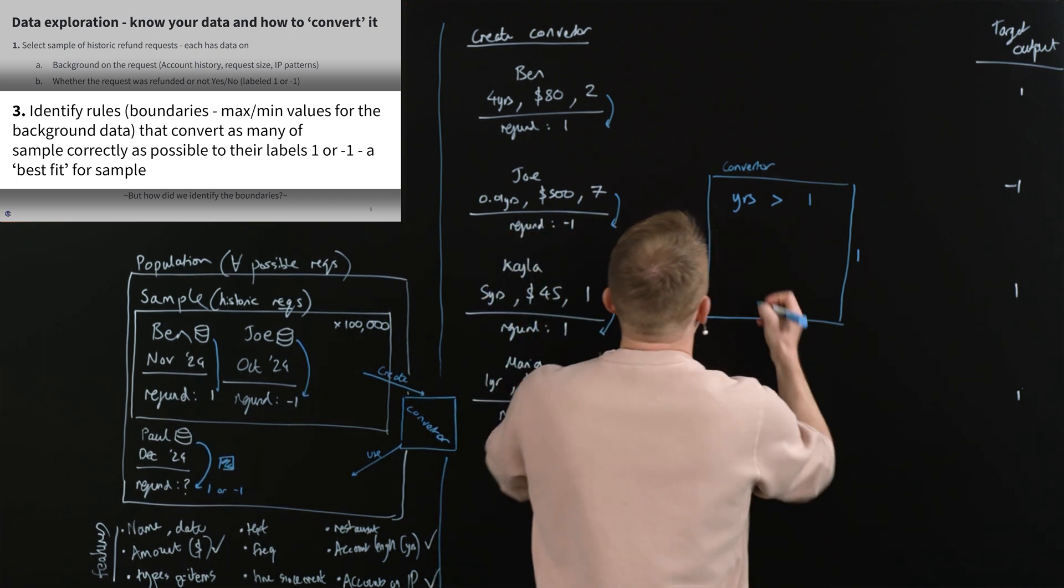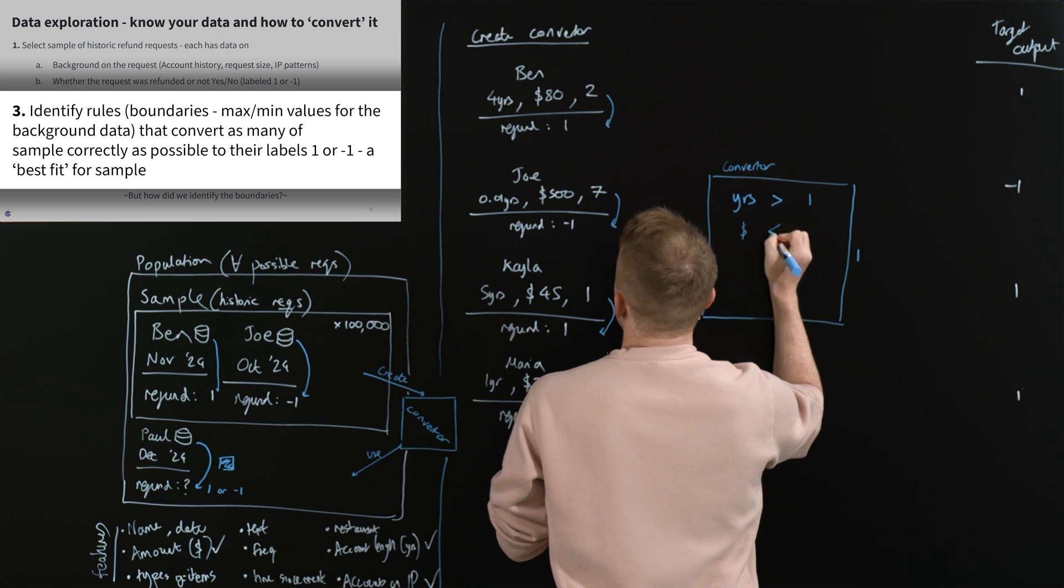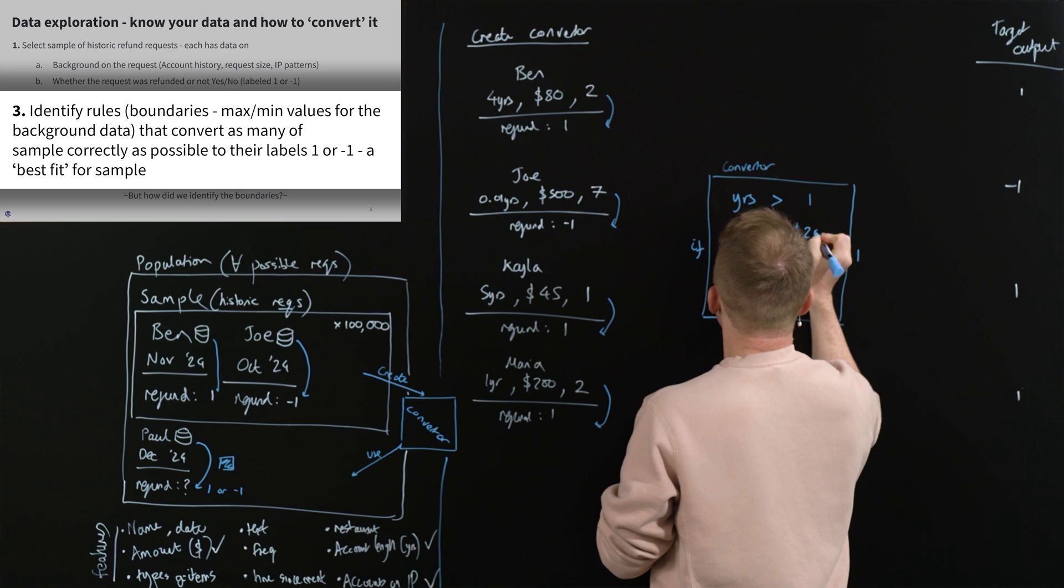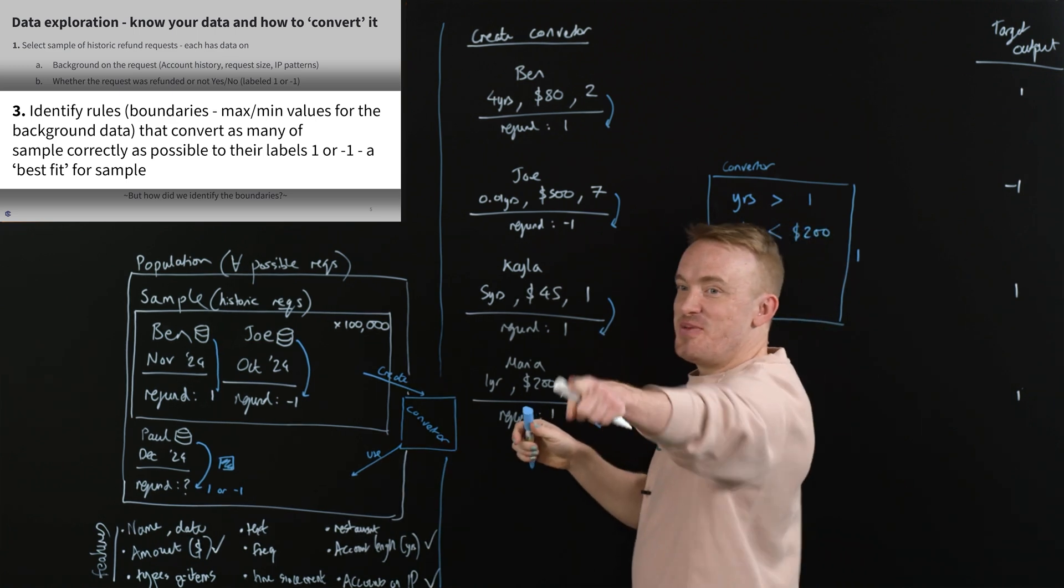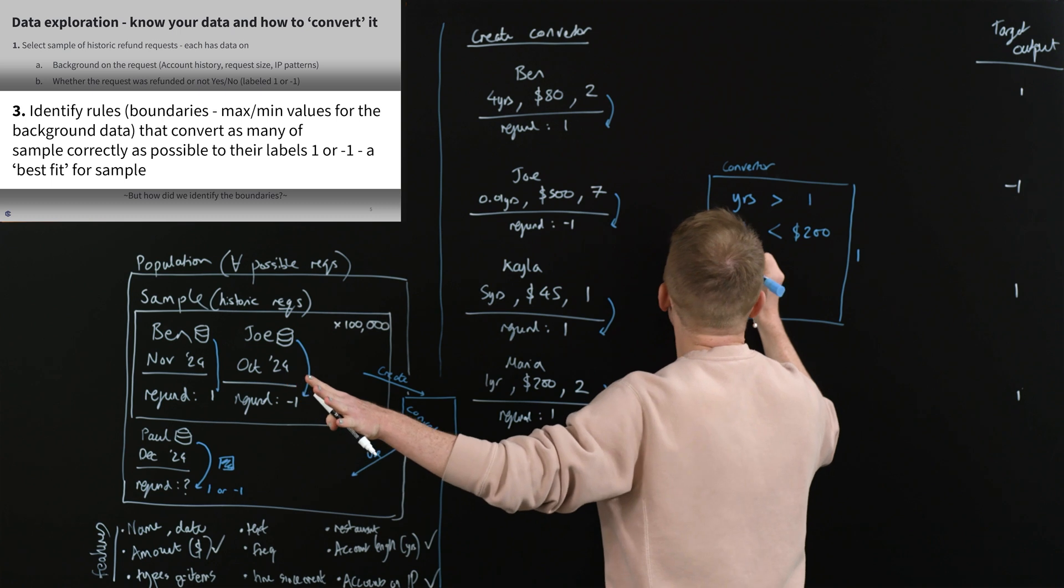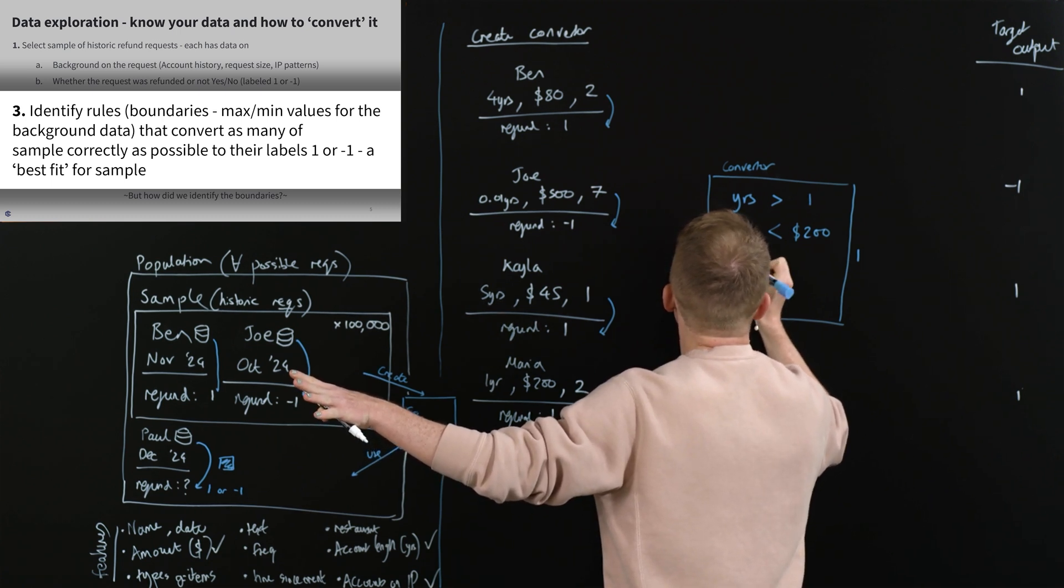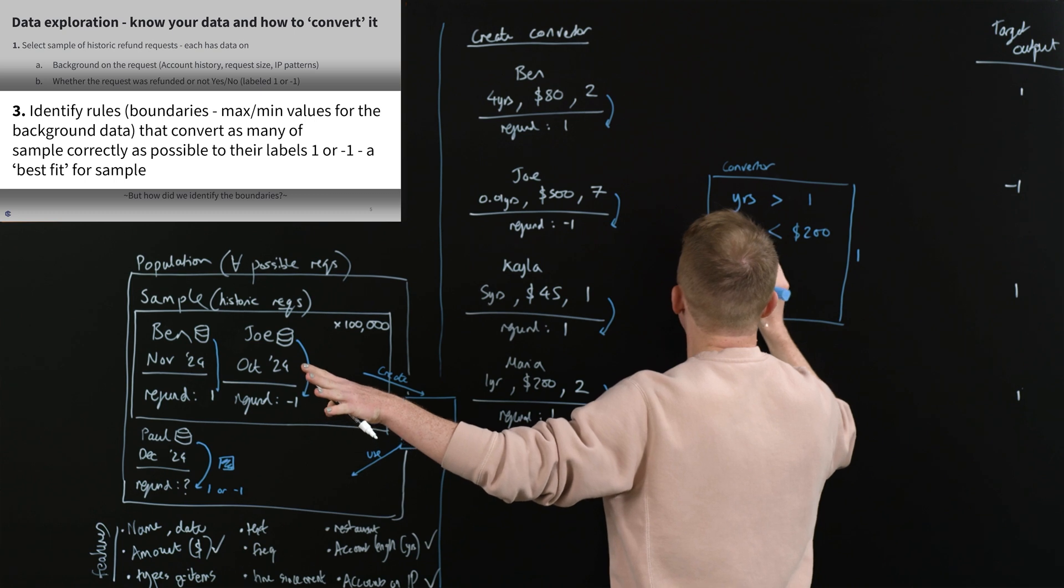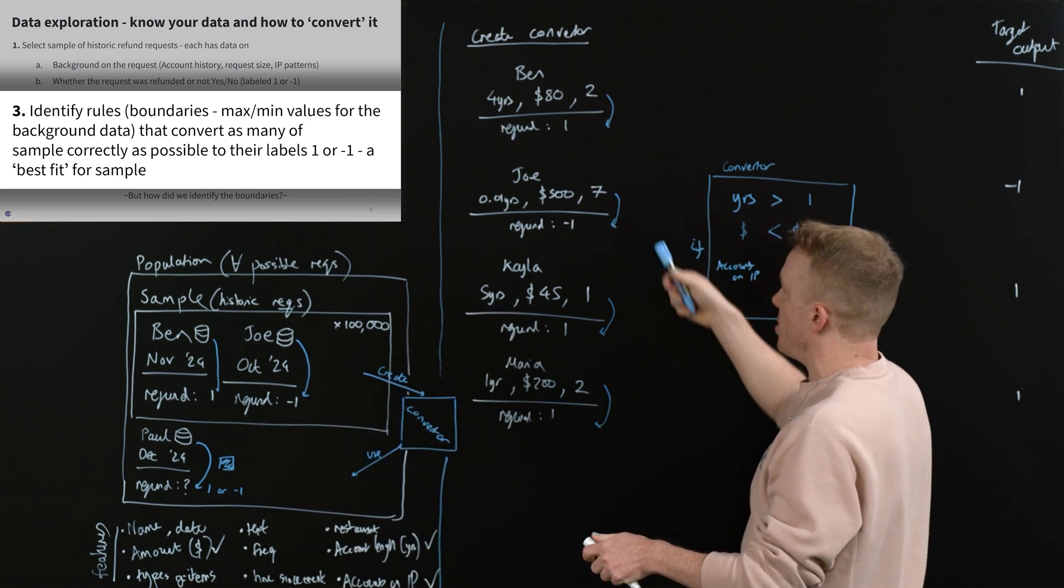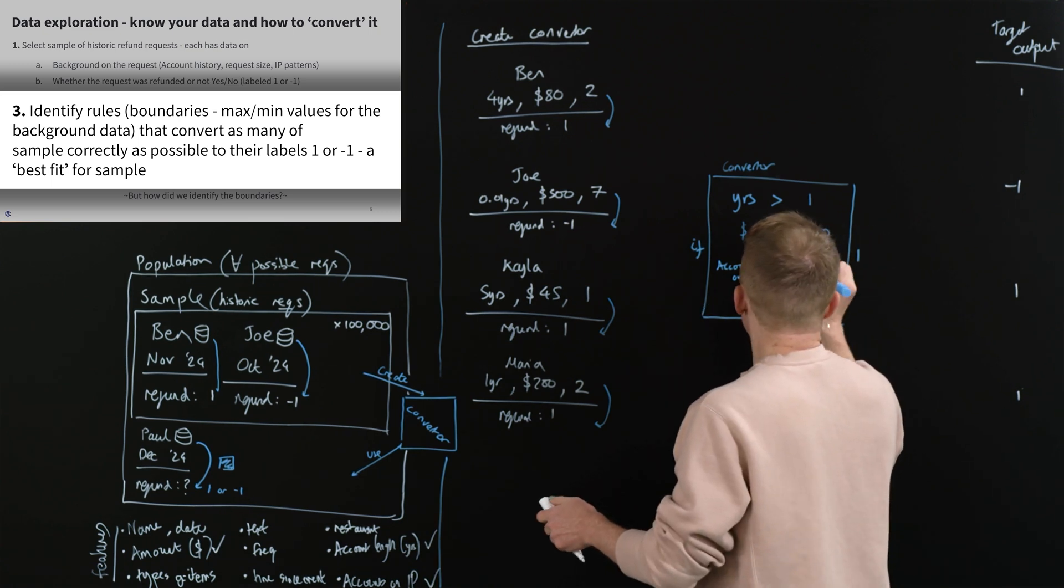But what about dollars? Spend less than what, Kayla, do you think, to be able to give a refund? Maybe $200. Why do I keep talking? Oh, I'm so sorry, Kayla. Less than what? $200. $200. Nice one, Kayla. And then accounts on IP. Accounts on IP. Let's say, less than what, people? We don't want Joes to pass, do we? So what do we think, people? Less than what? Three. Three. Sounds good to me. Amazing. All right.